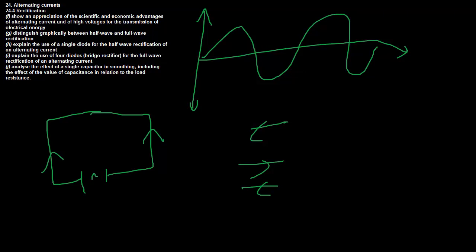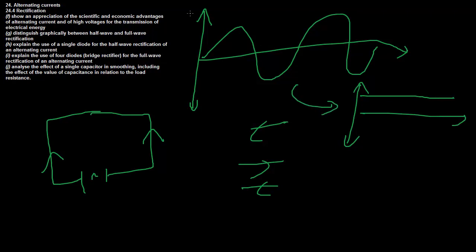Basically all consumer electronics use a DC current, which means current flows in one direction the entire time. We're kind of familiar with DC currents - they look like this. So what we want to do is change this AC wave into this DC form. We do it through a process called rectification - basically changing any wave going in both directions into a wave going in one direction.